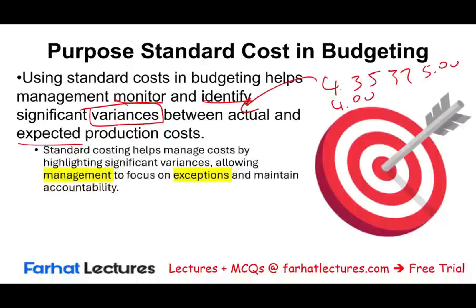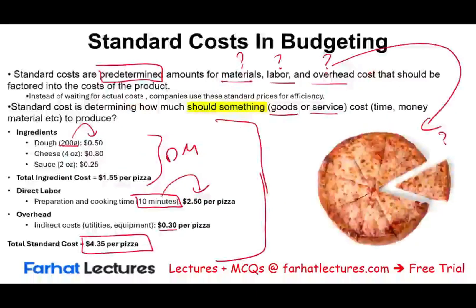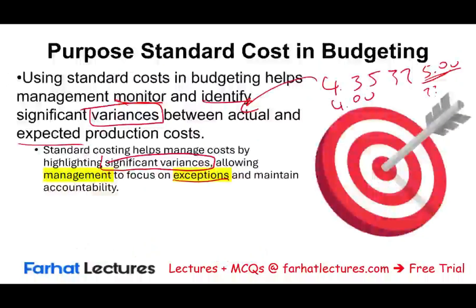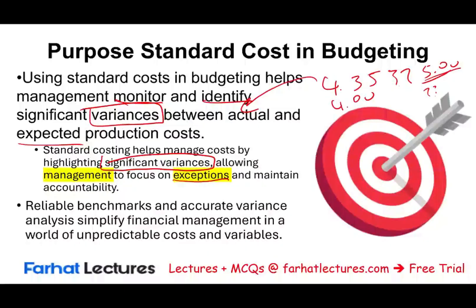Variances help management manage costs by highlighting significant deviations. For example, within the pizza, if it costs us $5 — why? We need to drill down. Was it the cheese? The sauce? The labor cost? The overhead? This allows management to focus on exceptions and deviations to maintain accountability. If the cheese is the issue, are we putting too much cheese on the pizza? Are we paying more for that cheese? We thought the cheese should cost $0.80 for four ounces — if prices went up, we have to adjust our standard cost and make a better decision. It's a reliable benchmarking tool to make better decisions.